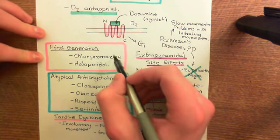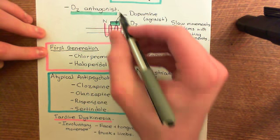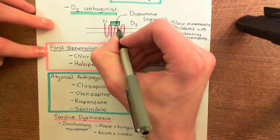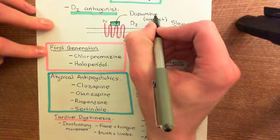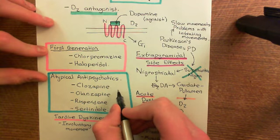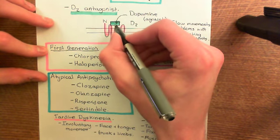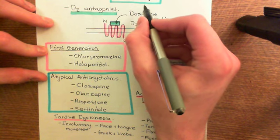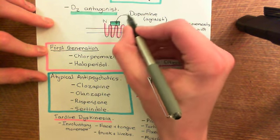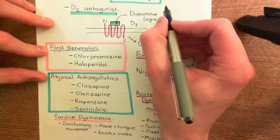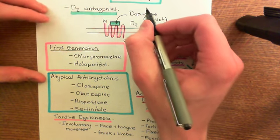In the case of the first generation antipsychotics, they bind to D2 receptors and then remain bound for absolutely ages before falling off again. Whereas in the case of atypical antipsychotics, they bind to the D2 receptor and then move off much quicker and then come back on much quicker, move off much quicker, come back on much quicker. What's the significance?